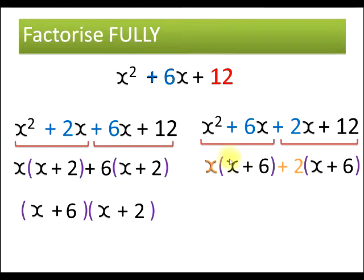So, the bits on the outside, the highest common factors, form our first bracket, and the repeated bracket forms the second bracket. You can see they're the other way round, but they are exactly the same answer.